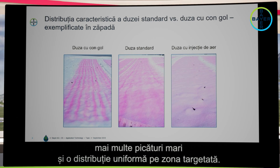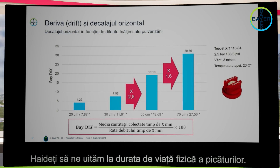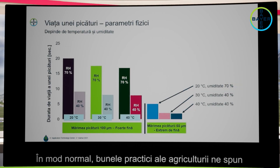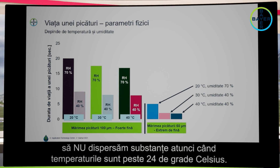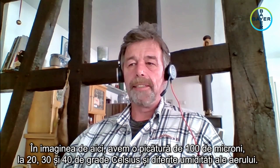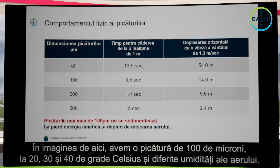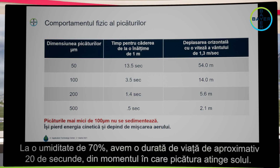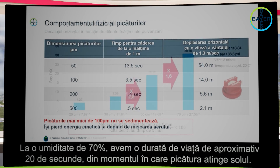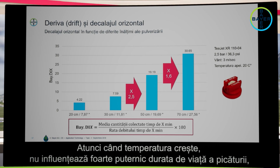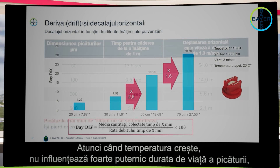Let's have a look at droplet behavior. Good agricultural practice recommends not spraying when temperatures are above 24 degrees. Looking at the slide, we have a droplet size of 100 microns at 20, 30, and 40 degrees and different air humidities. At a humidity of 70 percent, we have a lifetime of around 20 seconds for these droplets. When we increase the temperature, the curve falls only a little bit — there's no big influence on droplet lifetime from temperature.